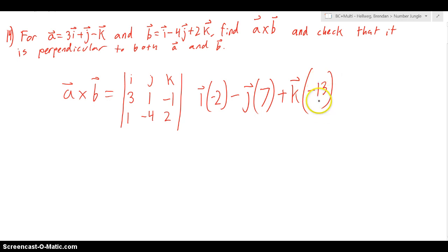So to write this out more cleanly, this will be equal to negative 2i minus 7j minus 13k.